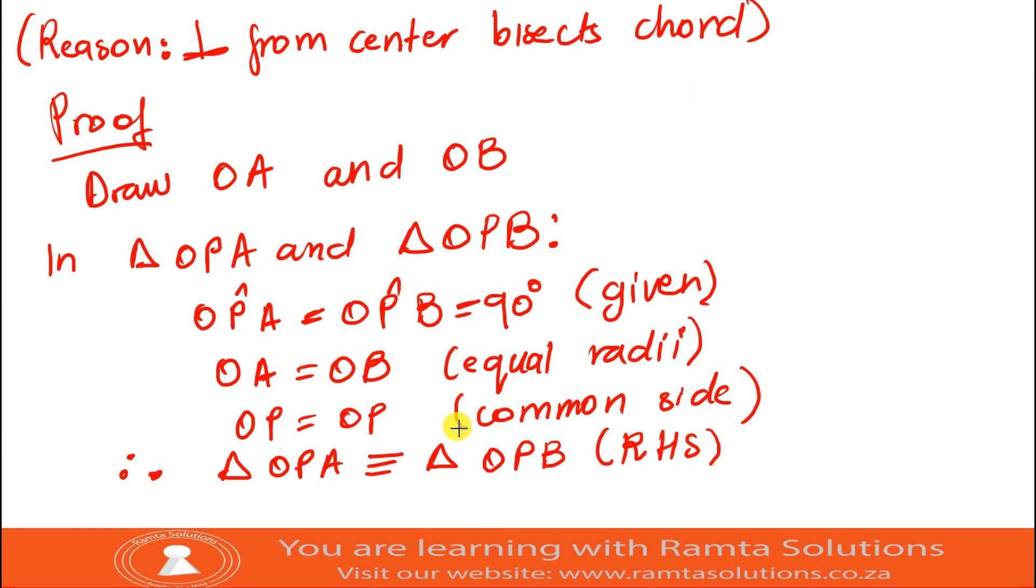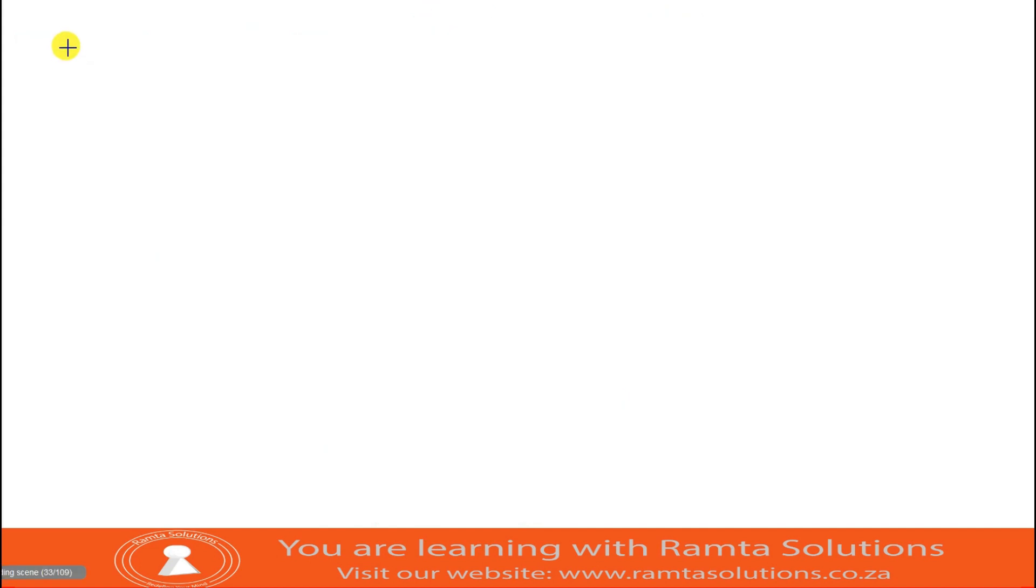Now, having said that, remember, when we talk congruency, all corresponding sides are equal and all corresponding angles are equal. Therefore, we can say AP is equal to PB. Therefore, OP bisects AB.